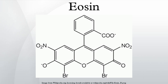For staining, eosin Y is typically used in concentrations of 1–5% weight by volume, dissolved in water or ethanol. For prevention of mold growth in aqueous solutions, thymol is sometimes added. A small concentration of acetic acid usually gives a deeper red stain to the tissue. Eosin is listed as an IARC class III carcinogen.